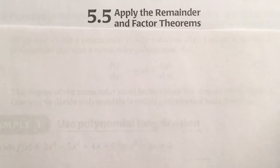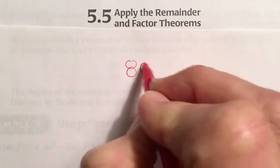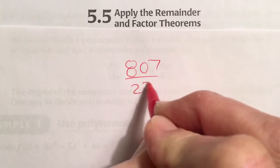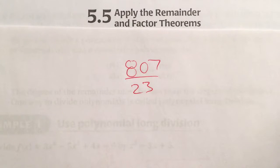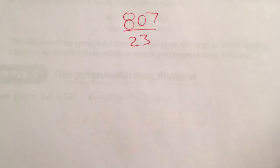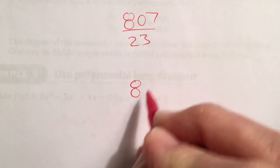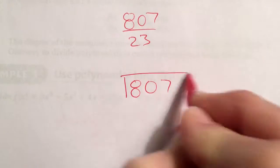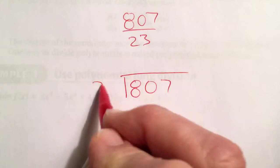Before we do a polynomial, let's try long division on some numbers. We'll do something we probably learned back in fifth grade. Let's say you want to divide 807 by 23. To do that, you set it up like this. You put your 807, your hundreds, your tens, your ones into a box and divide by 23.